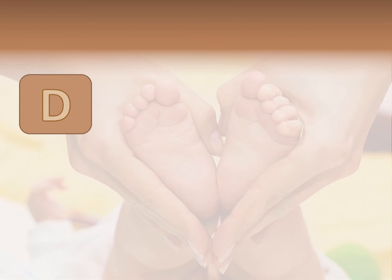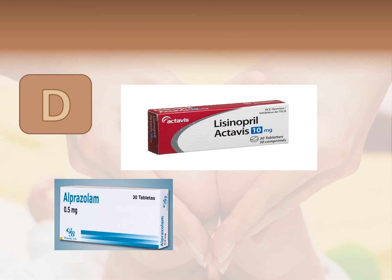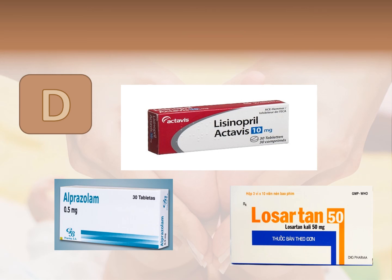Category D means there is positive evidence of risk in humans, so it should be avoided in pregnancy. However, it could be administered if there is no alternative. For example, Lisinopril, an ACE inhibitor for hypertension; Alprazolam, a sedative and hypnotic; and Losartan, which treats hypertension.